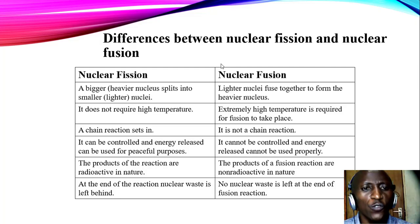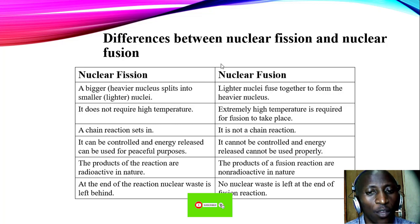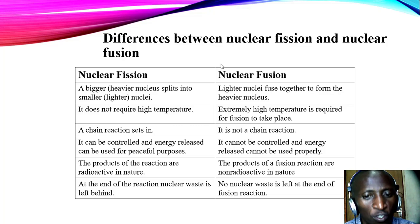Viewers, let us look at the differences now between nuclear fusion and fission. In fission, a bigger or heavier nuclear splits into smaller or lighter nuclei. Whereas, in fusion, lighter nuclei fuse together to form the heavier nucleus. Number two, nuclear fission does not require high temperature. While in fusion, extremely high temperatures are required for the fusion to take place. Number three, in nuclear fission, a chain reaction sets in. Whereas, in nuclear fusion, a nuclear chain reaction does not set in.